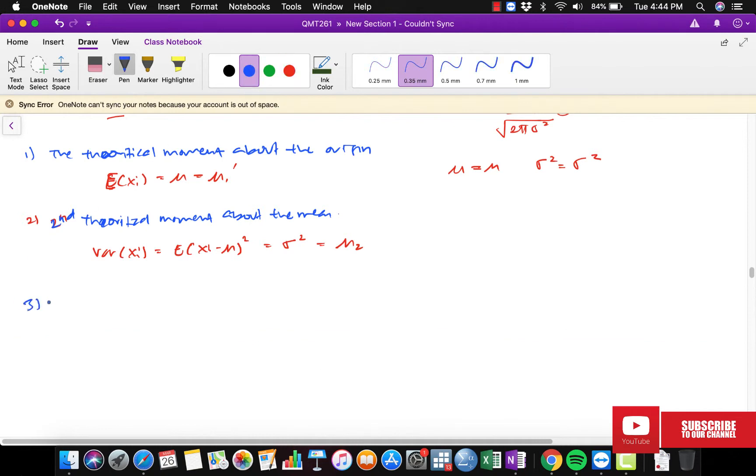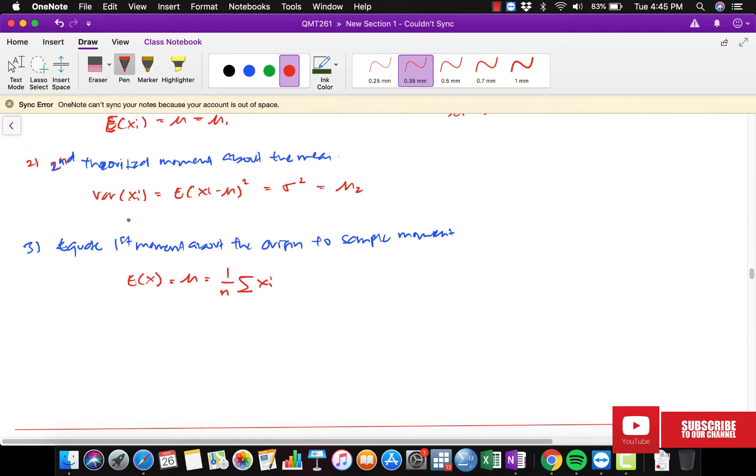This is Var(Xi) equal to E(Xi minus mu) squared. This is going to be sigma squared, which is mu2. Three, we need to equate the first moment about the origin to the sample moment. So this one should be E(X bar) equal to mu equal to 1 over n summation of Xi.